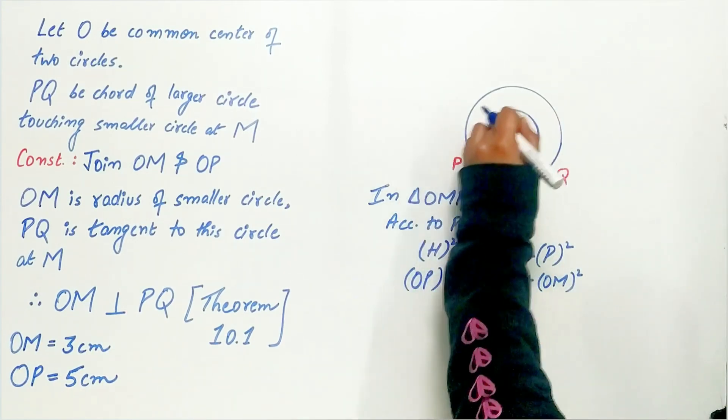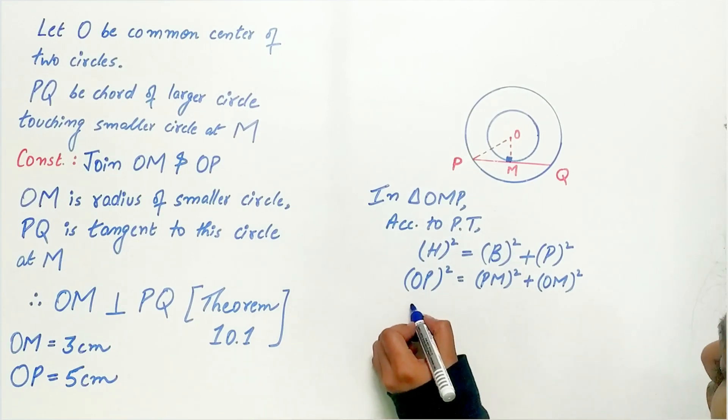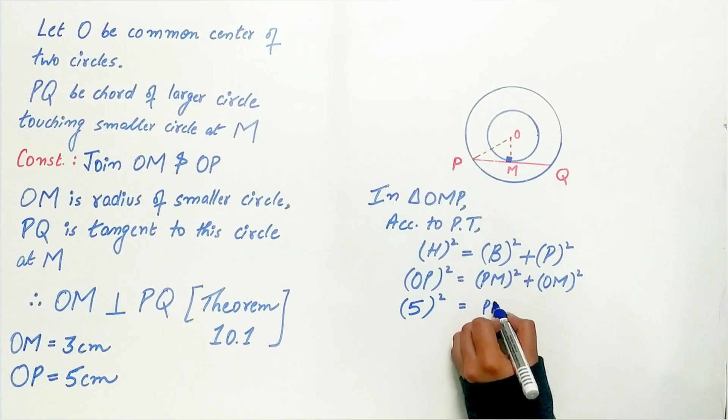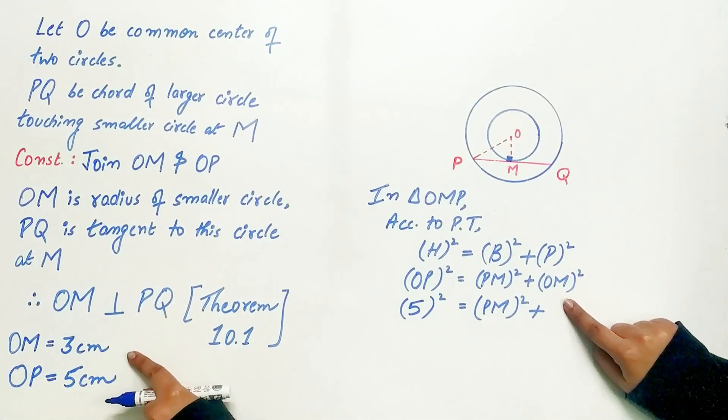OP square, OP is 5 cm, equals PM square plus OM square. OM is equal to 3 cm.